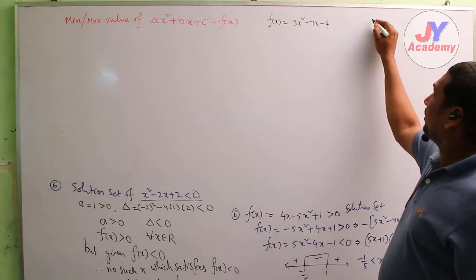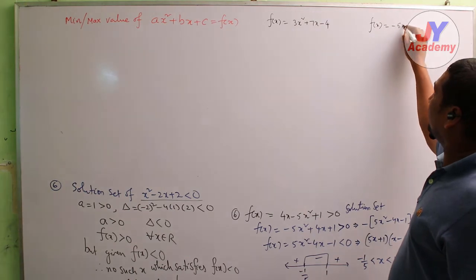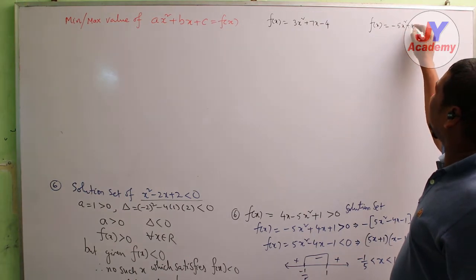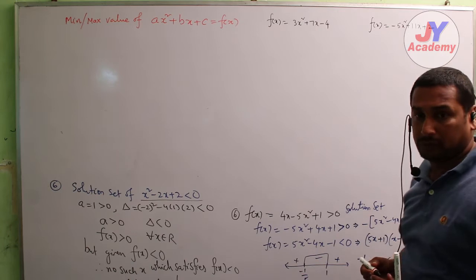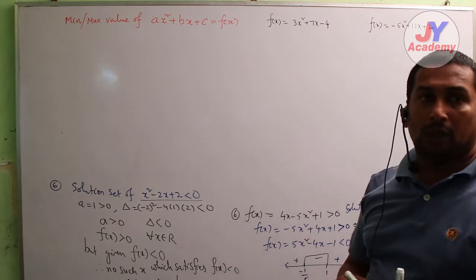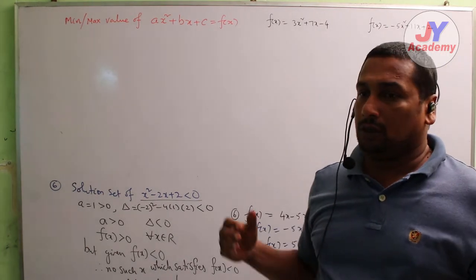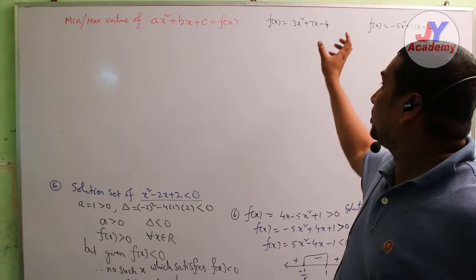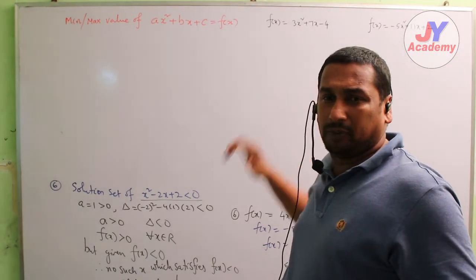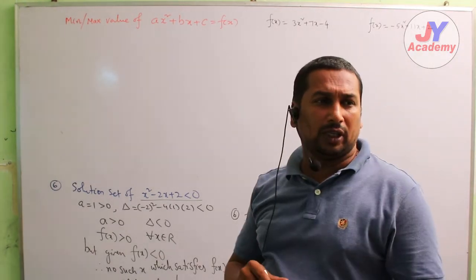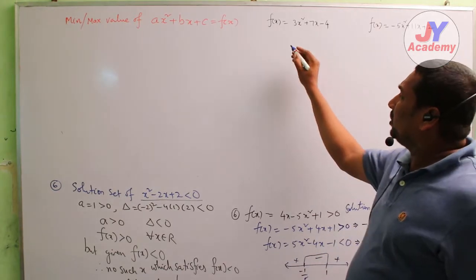And one more example we have to take: f(x) is equal to minus 5x² + 11x + 2. So for which expression it has a minimum or maximum, that we are going to discuss now. We'll use the complete squaring method.